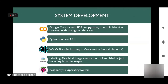YOLO — You Only Look Once — is a deep learning CNN algorithm in which the image is processed as a whole and bounding boxes are created around the detected objects. LabelImg is a tool used for annotation of the collected dataset images. Raspberry Pi is the microcontroller used in our trap to control the IoT sensors and transfer data to the cloud.